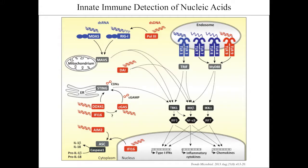For RNA, there is the RIG-I and MAVS pathway that activates the inflammatory response within antigen-presenting cells. For double-stranded DNA, there are two pathways: the inflammasome pathway, and the cGAS-STING pathway, which has a lot of promise in cancer. Upon binding of double-stranded DNA to cGAS, it binds to STING, activating downstream IRF3 and NF-κB transcription factors, leading to type I interferon release and pro-inflammatory cytokine release, making the cell a strong stimulatory antigen-presenting cell.